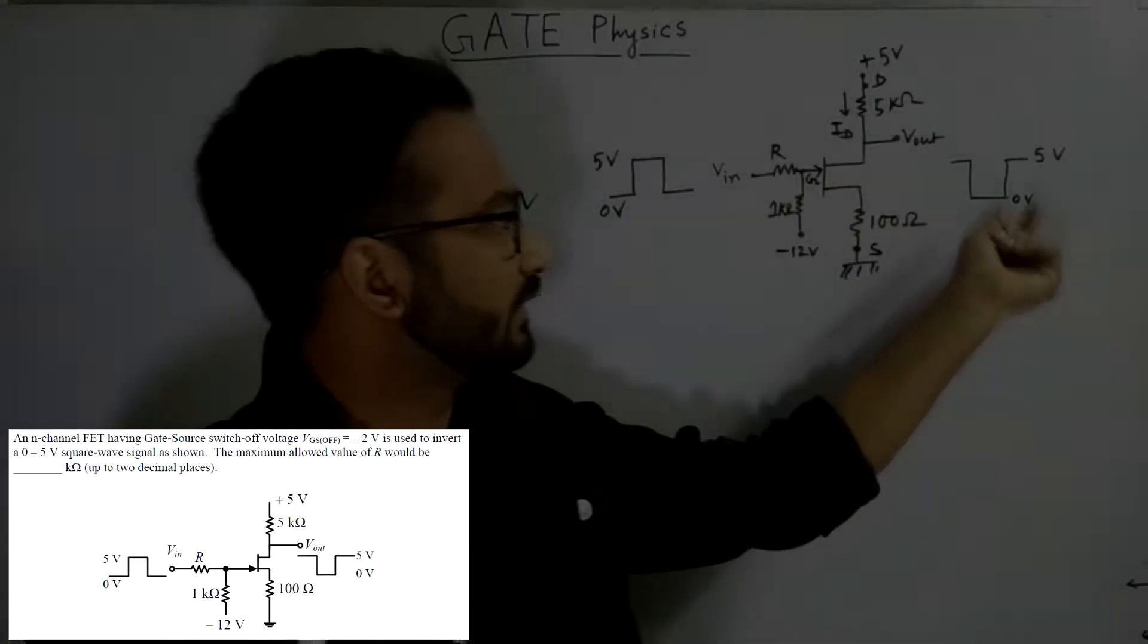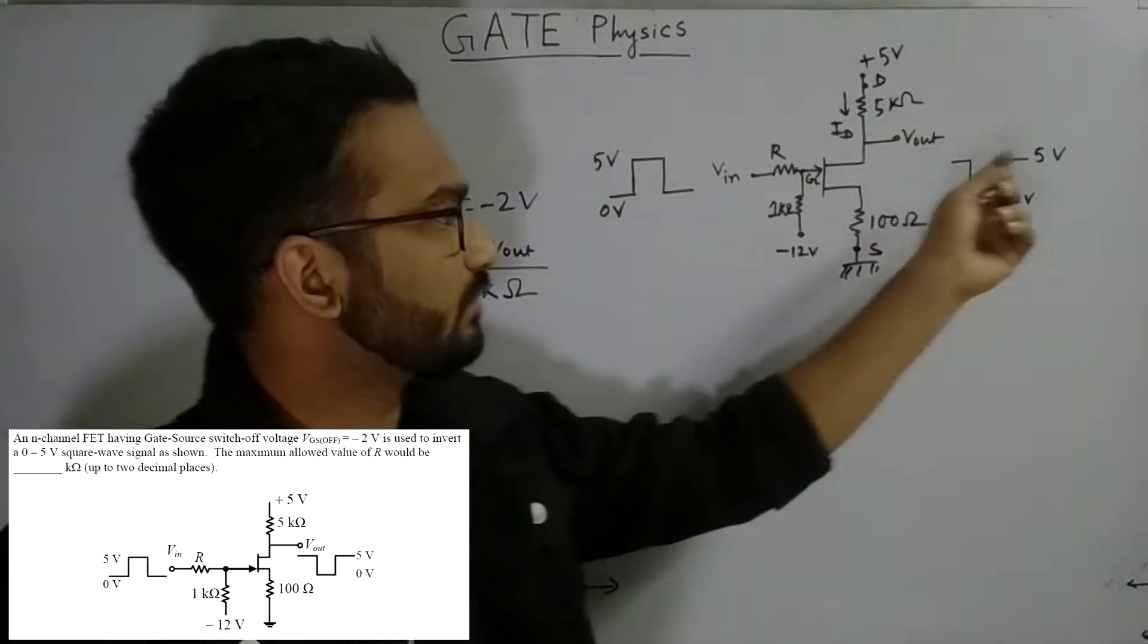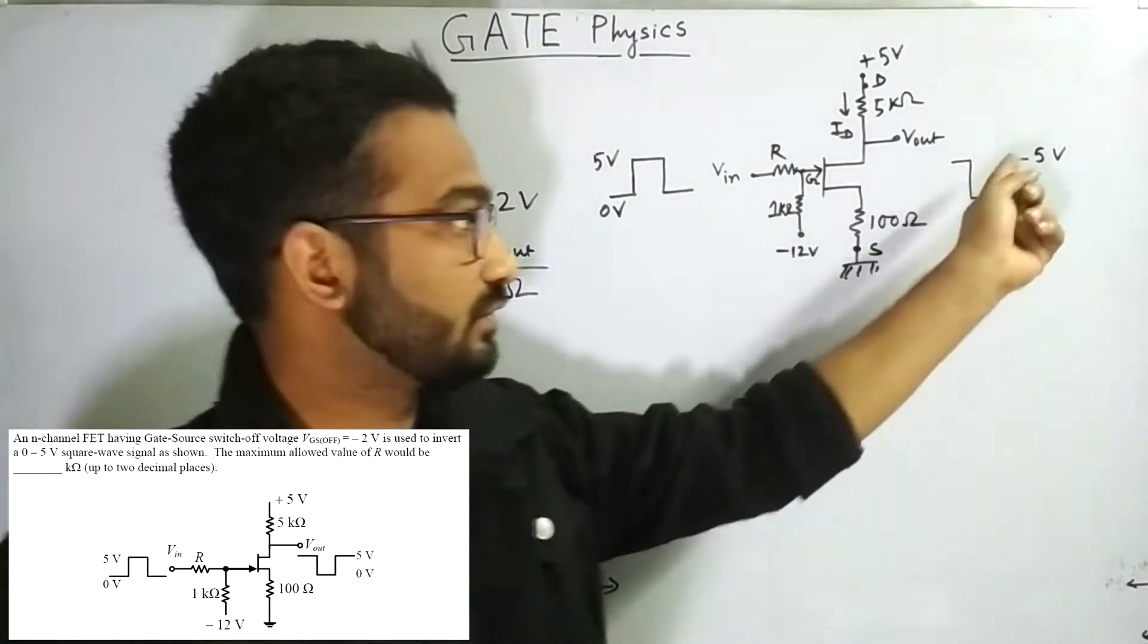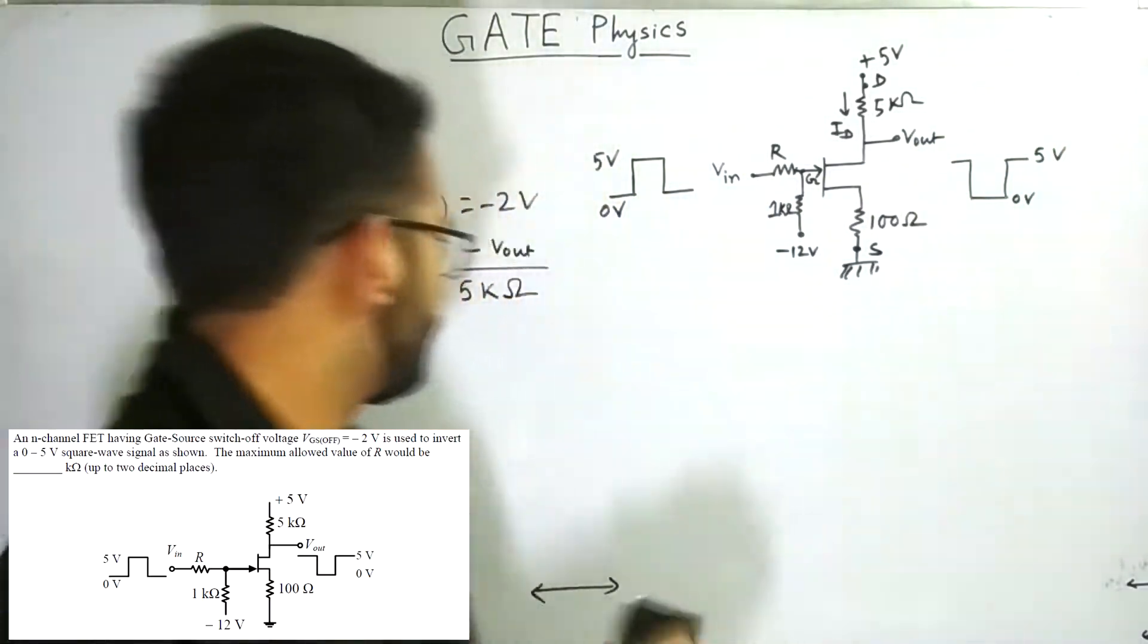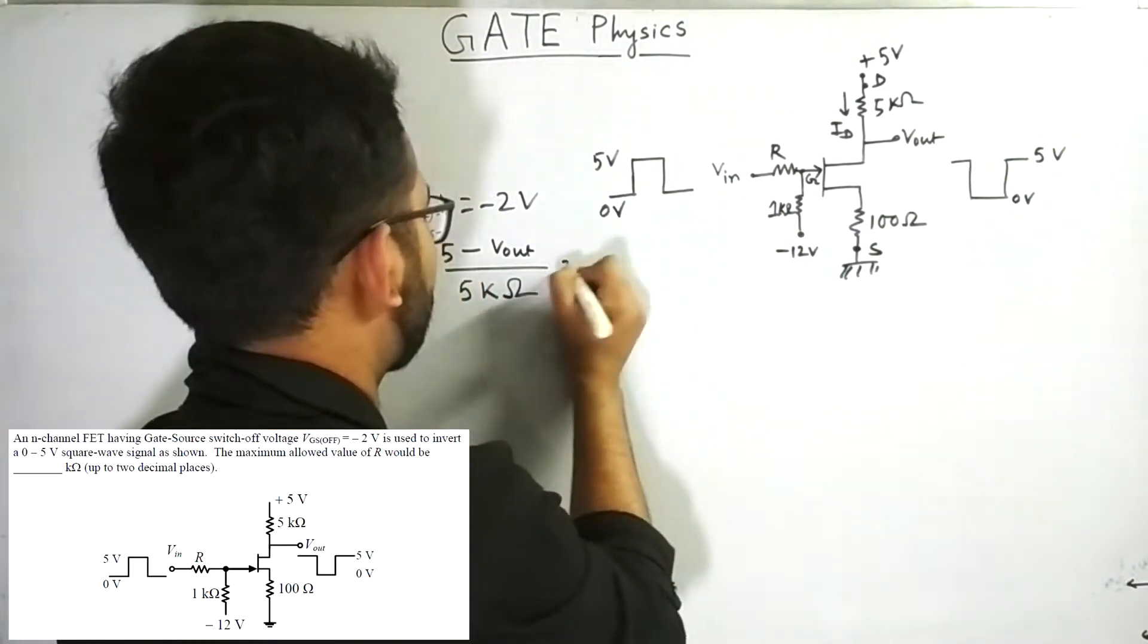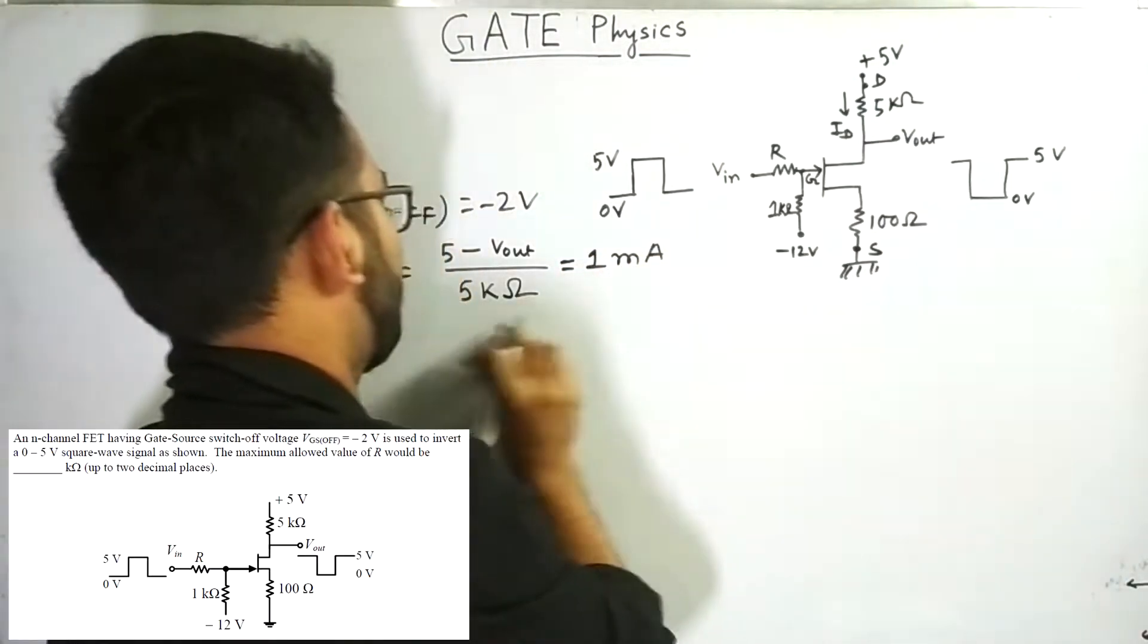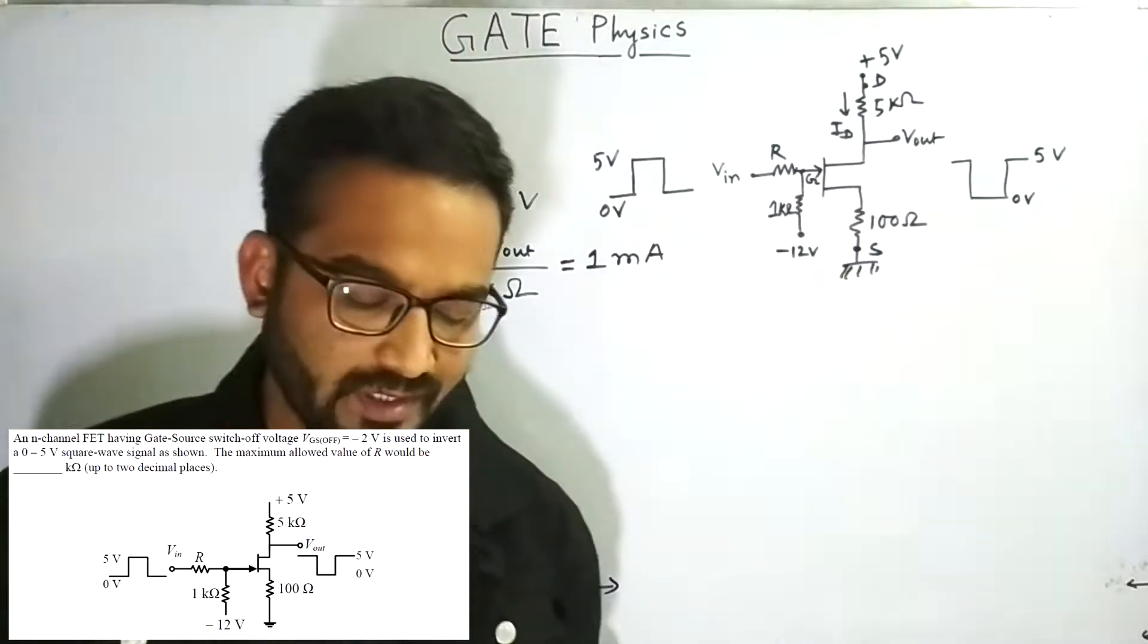This signal is to be inverted. So when it is 0, it will give you 5, and when it is 5, it will give you 0. So let's consider we are at 5. So it should give 0 at the output. So V output equals to 0. So 5 minus 0 by 5 means 1. 1 milliampere. So we have got ID.